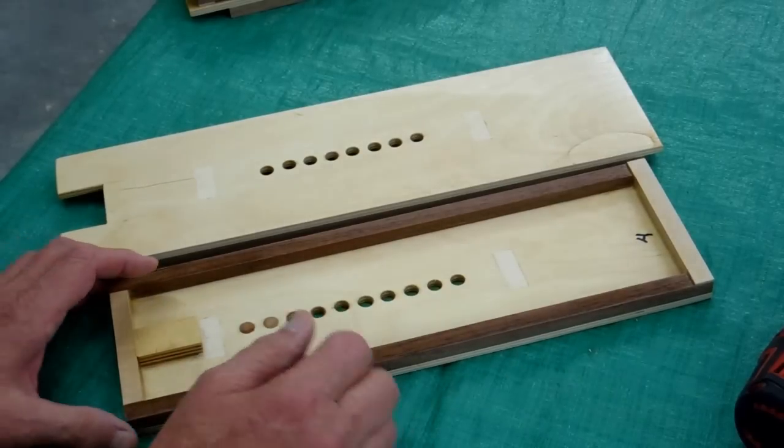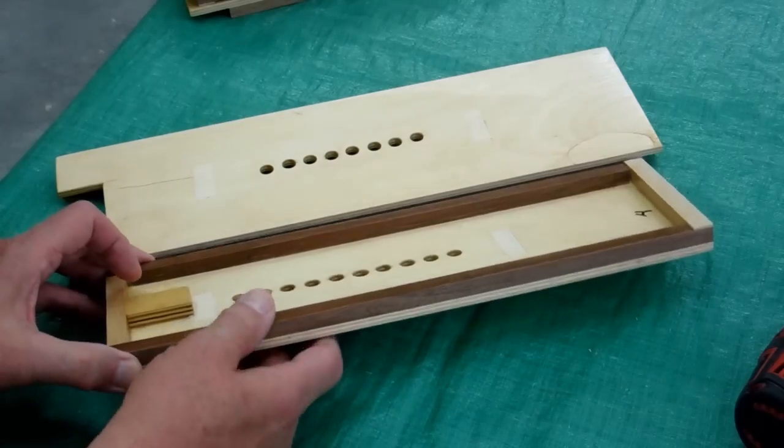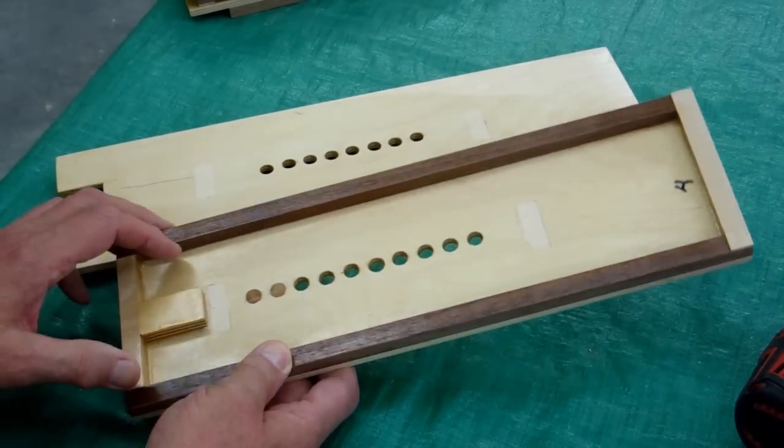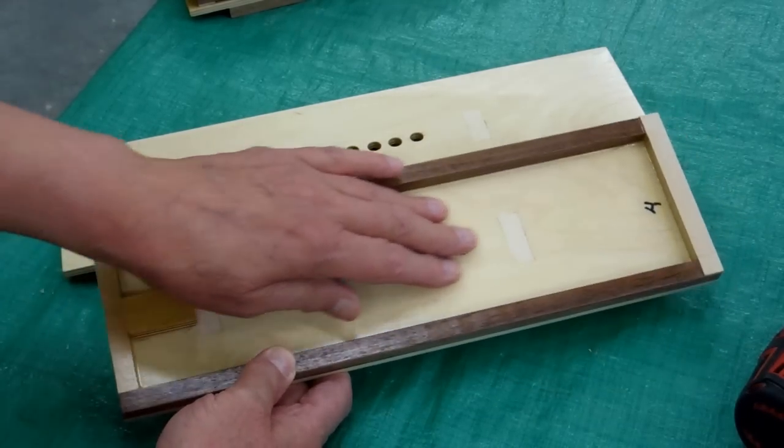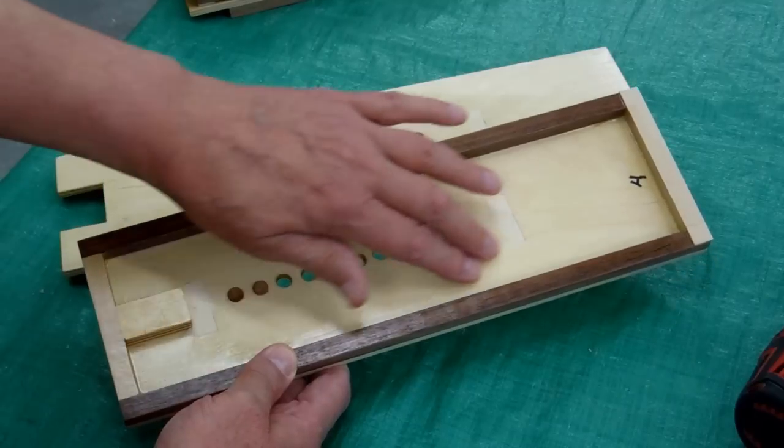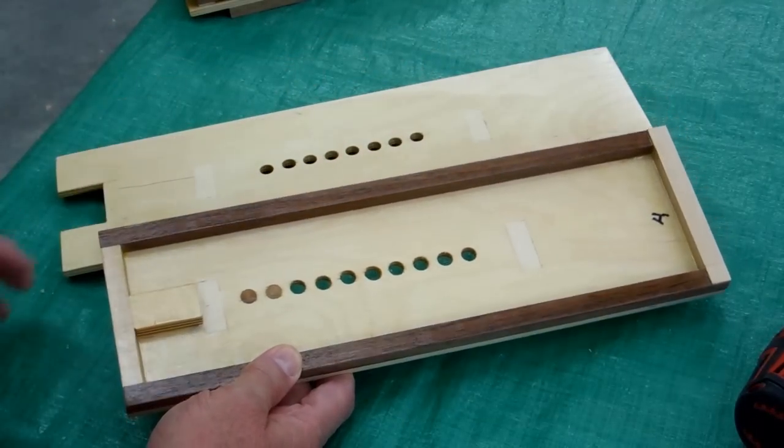After putting two coats of oil-based polyurethane on here, I went back inside with a detail sander and sanded this just to make it glass smooth.